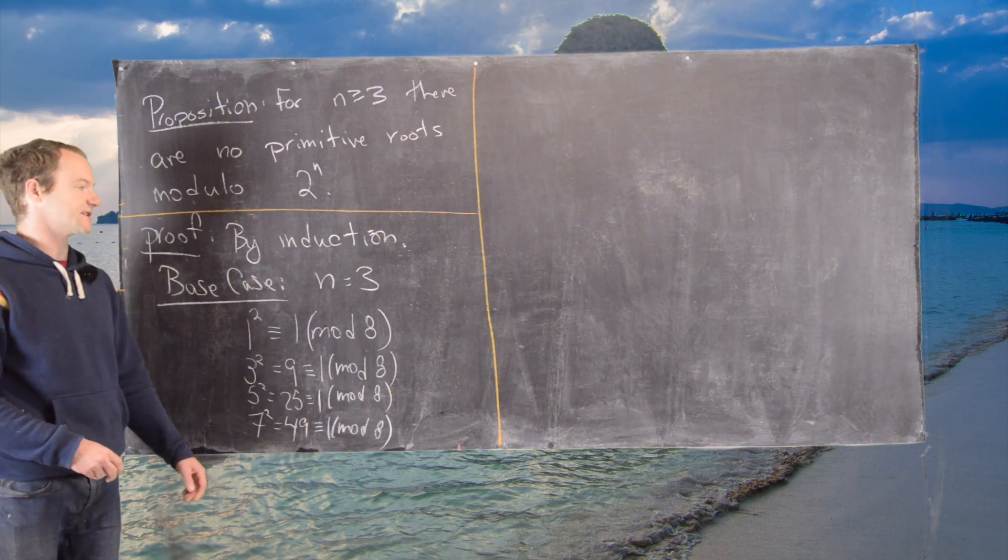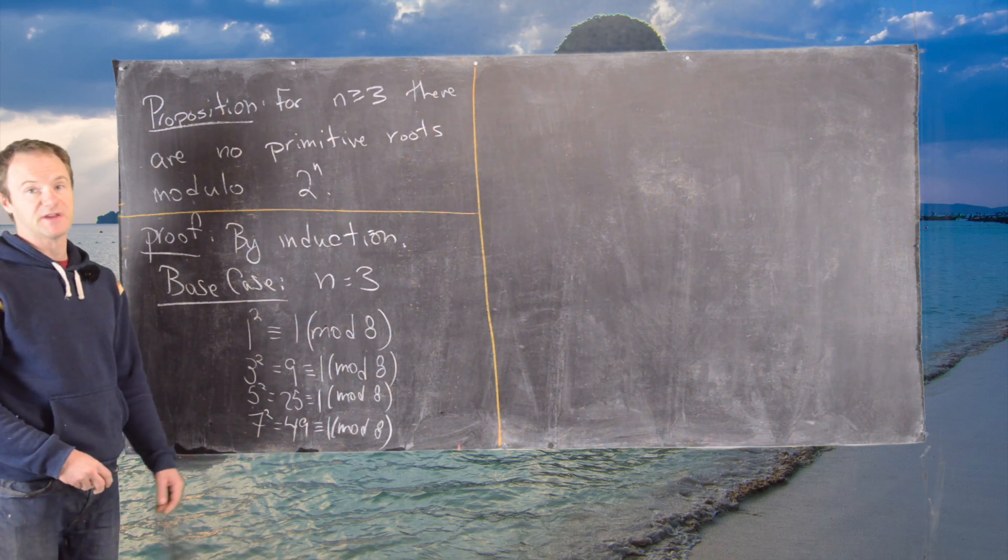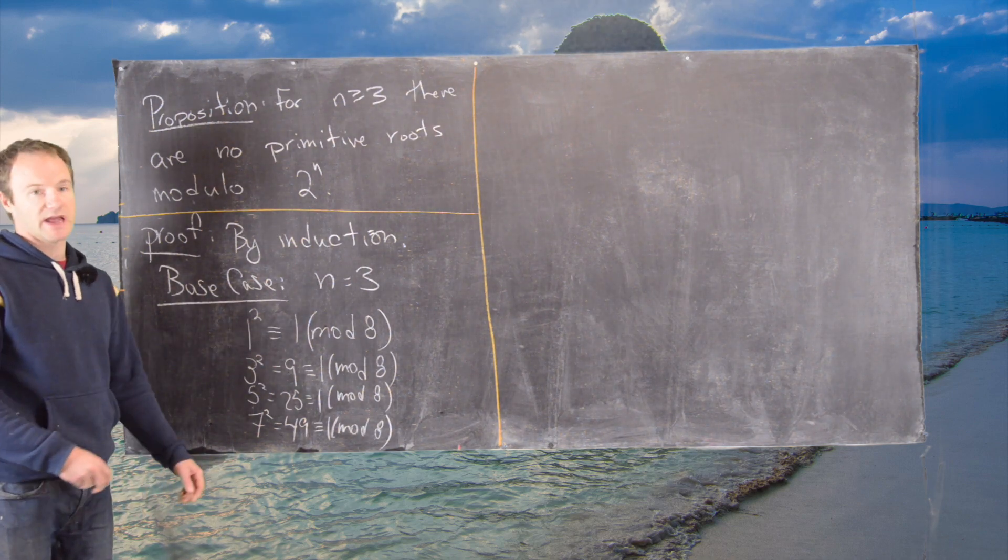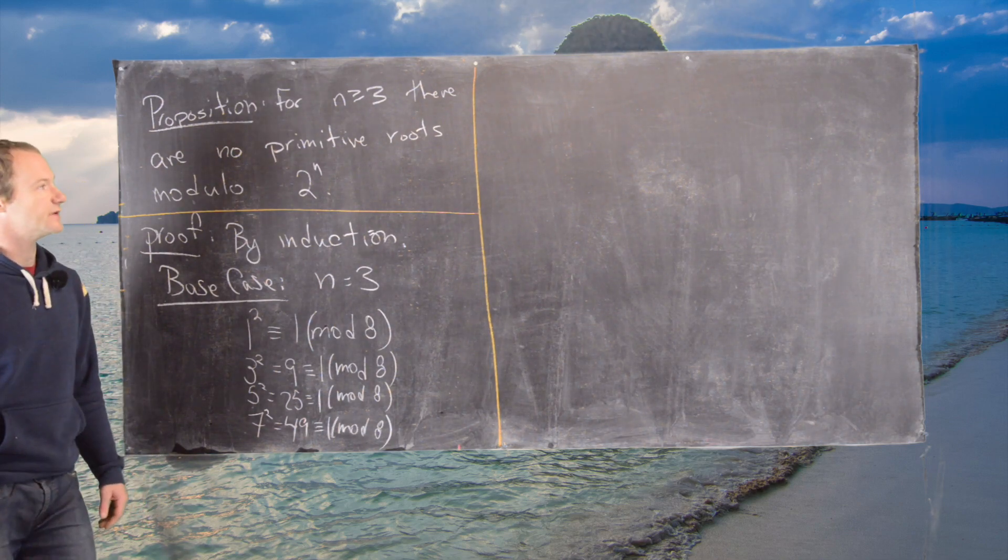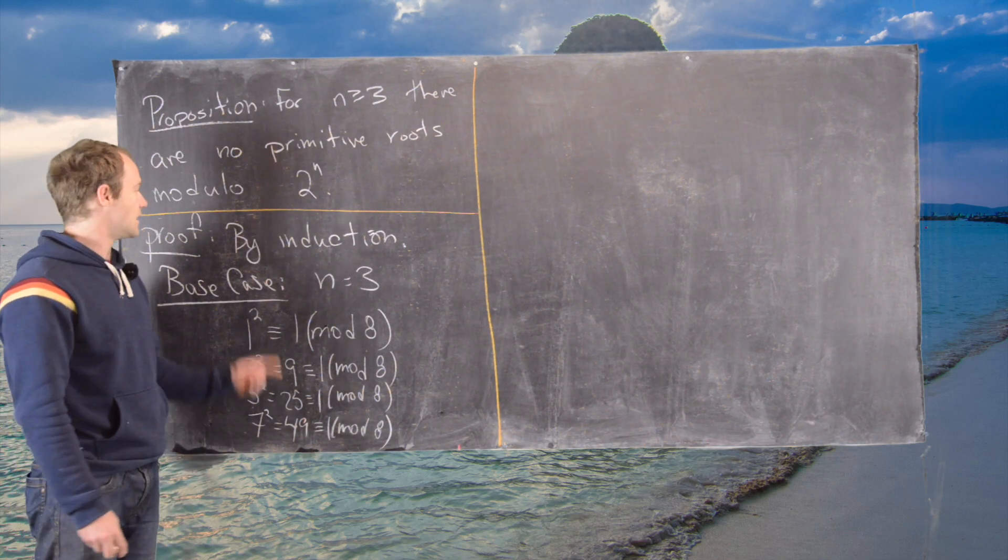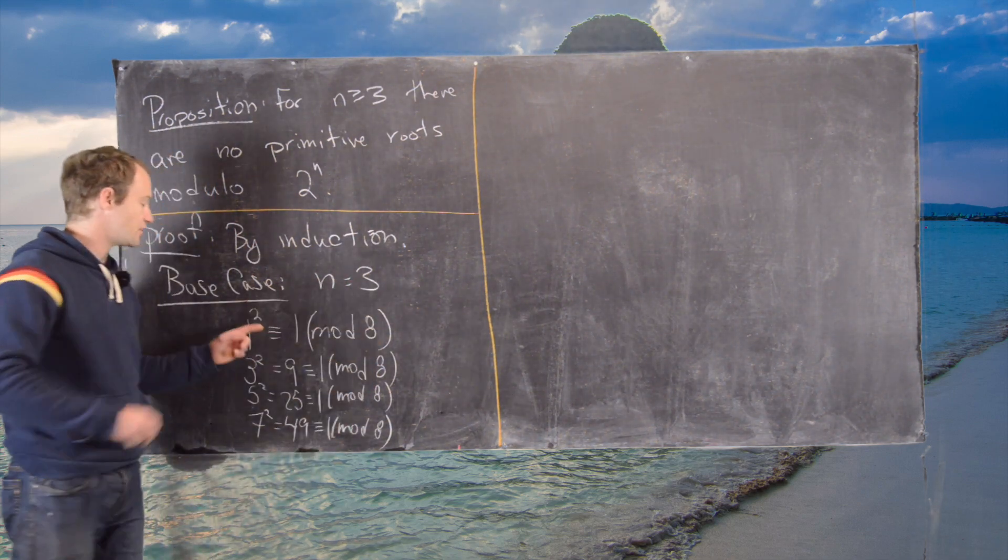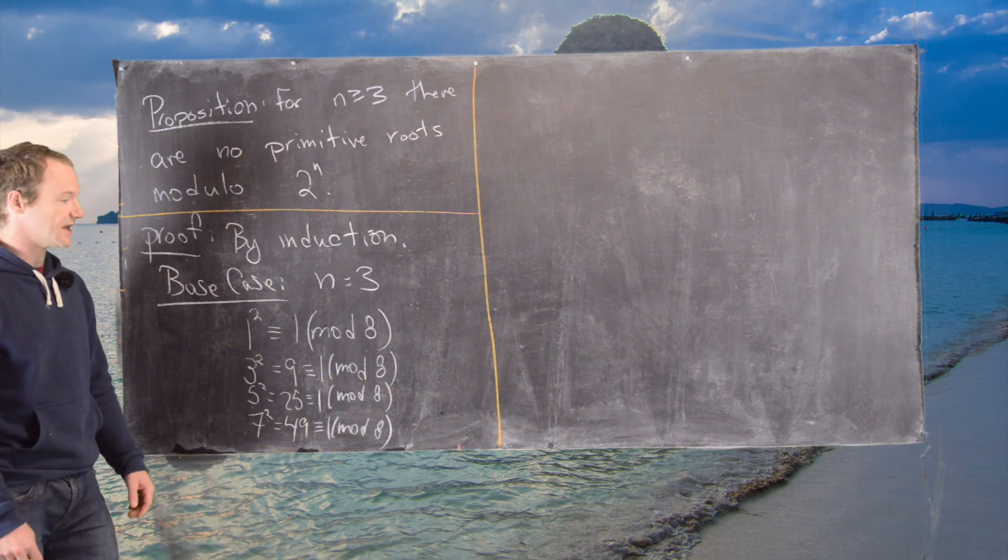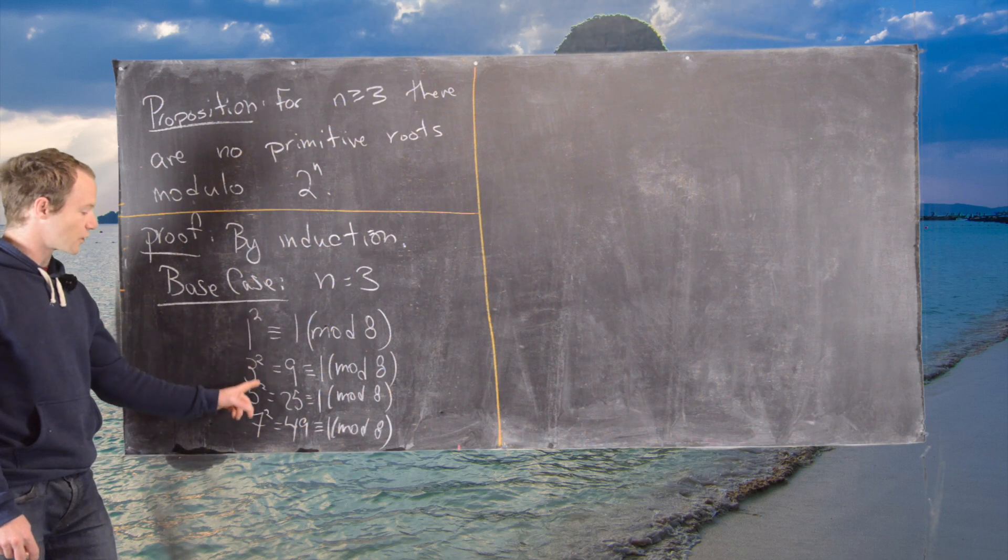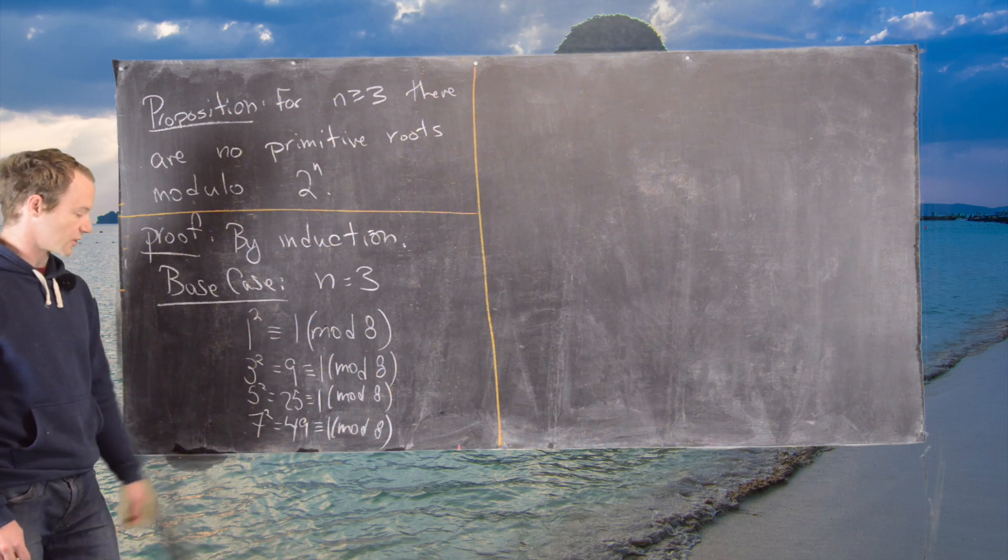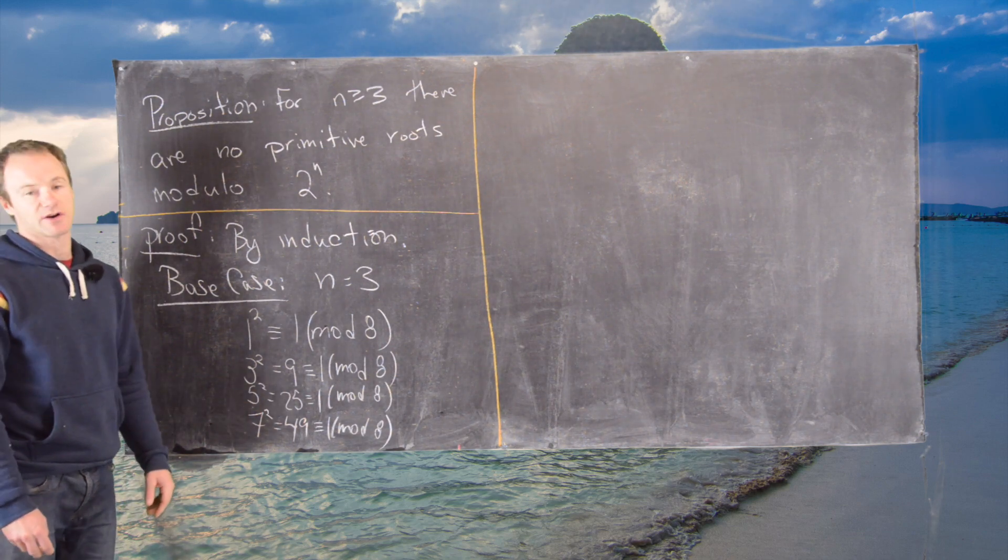So what that tells us is that there is no integer of order 4, which is phi of 8 modulo 8. In other words, there are no primitive roots modulo 8. And now what we want to do is go on with the induction by taking an induction hypothesis and we'll use this base case as an inspiration.